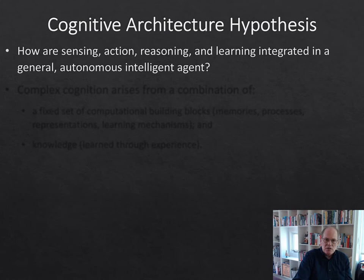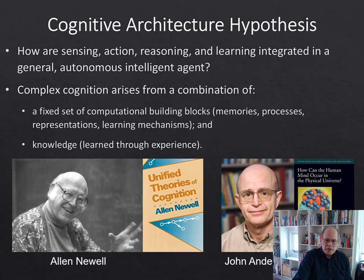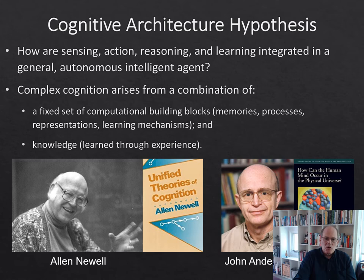This is the cognitive architecture hypothesis, which tries to answer how sensing, action, reasoning, and learning are all integrated into an autonomous agent. The hypothesis is that complex cognition arises from a combination of a fixed set of computational building blocks — a set of memories, processes, representations, and learning mechanisms. On top of that is the knowledge, which is either innate or learned from experience, and that's often going to be programmed by a human or hopefully learned. That's what provides the different cognitive capabilities and supports the tasks.